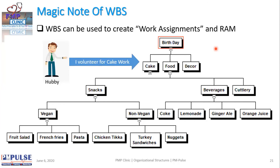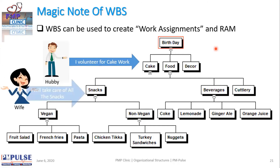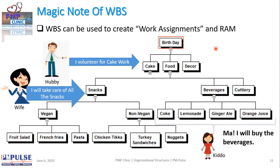My wife said she's a good cook and will take care of all the snacks, and my daughter decided she would buy all the beverages. Now replace this with your actual organization: different functions like quality, business analysis, product development, or construction — or you may decide that an entire portion has to be outsourced because you don't have the capacity to do it yourselves. This is called resource assignment, or RAM — Resource Assignment Matrix — and WBS is used for that extensively all over the world.